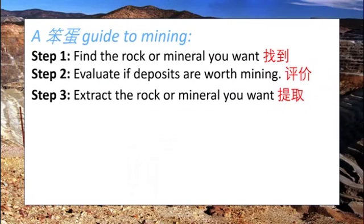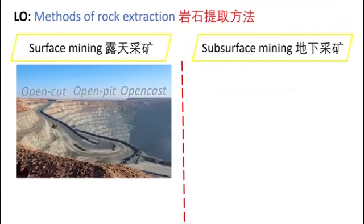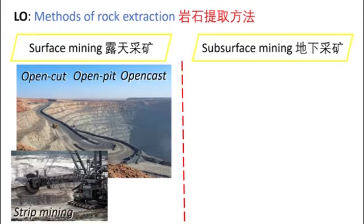Step three is the actual extraction process — the mining itself. There are two options: surface mining or subsurface mining. Surface mining, also known as open cut, open pit, or open cast mining, takes place on the earth's surface. There is also a surface mining technique called strip mining, where you strip layers from the land layer by layer, which is commonly used in coal mining.